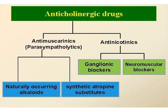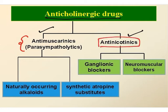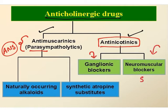Anticholinergic agents are classified as anti-muscarinics and anti-nicotinics. Anti-muscarinics are known as parasympatholytics, whereas anti-nicotinics cannot be called parasympatholytics. The reason is the parasympathetic system belongs to the autonomic nervous system, but nicotinic receptors are present on the ganglion as well as the neuromuscular junction, which belongs to the somatic nervous system. This is why you cannot call anti-nicotinics parasympatholytics — that term is only restricted to anti-muscarinics.